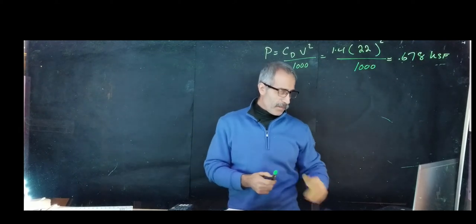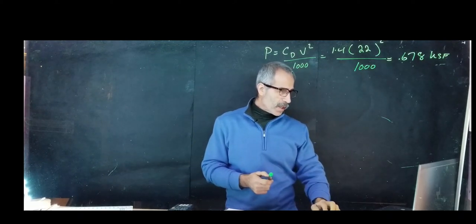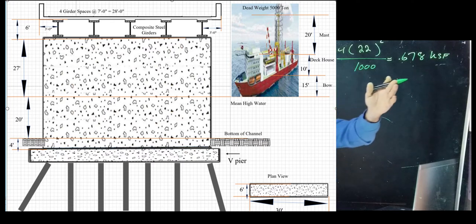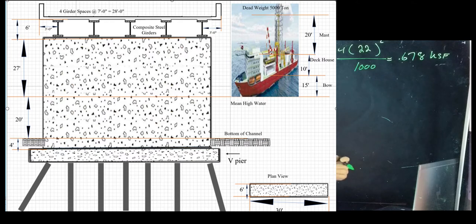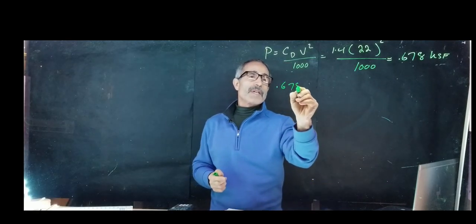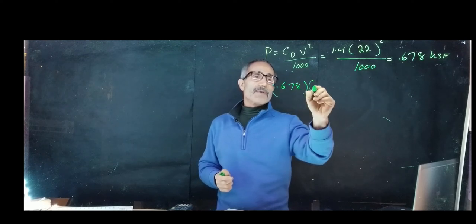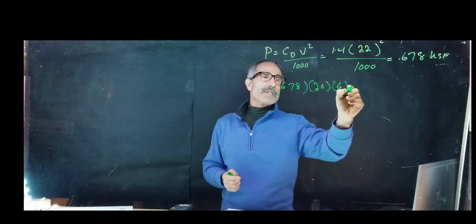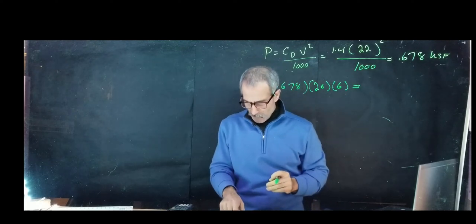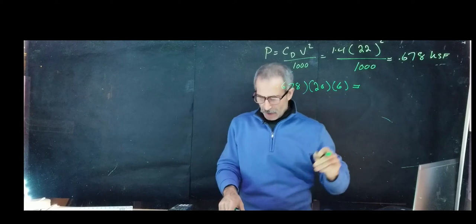Looking at the picture again, the pier below the water is about 20 feet all the way to the bottom of the channel. The area that we have is 20 feet by 6 feet. Let's multiply this by the area: 0.678 times 20 times 6 feet, and that comes out to 81 kips. This is the stream pressure.